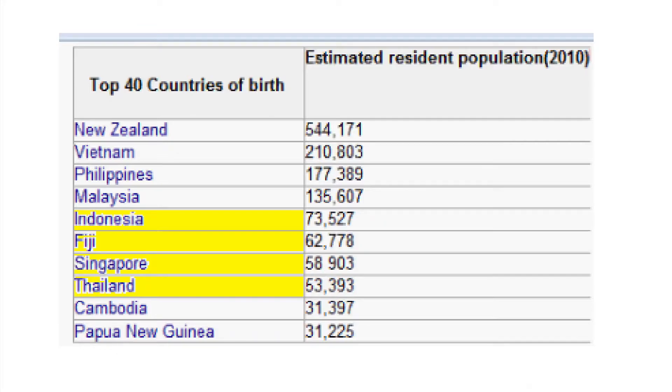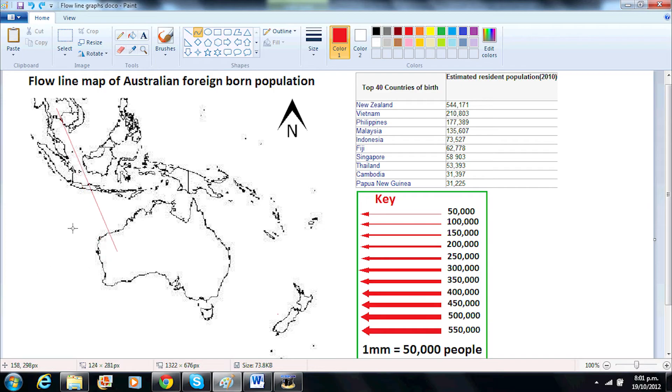Since there are between 53,000 and 73,000 people born in Thailand, Singapore, Fiji, and Indonesia residing in Australia, we will draw one millimeter thick lines flowing from those countries to Australia.